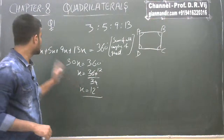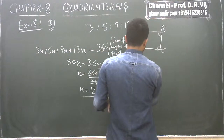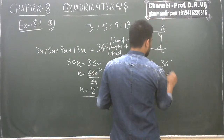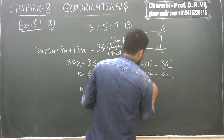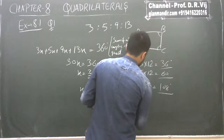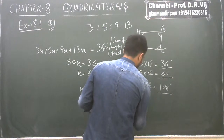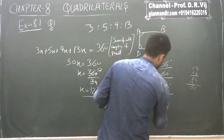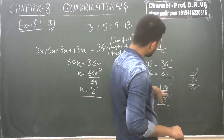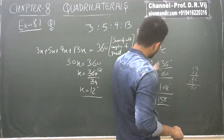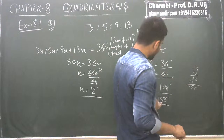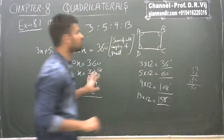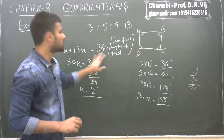Now we know x, so we can easily find all the angles. The first angle is 3 times 12 equals 36 degrees. The second is 5 times 12 equals 60 degrees. The third is 9 times 12 equals 108 degrees. And the fourth is 13 times 12 equals 156 degrees. Adding these: 36 plus 60 plus 108 plus 156 equals 360 degrees. So it was a very easy question — the basic concept is that the sum of all angles of a quadrilateral is 360 degrees.